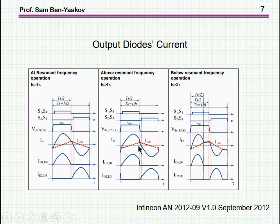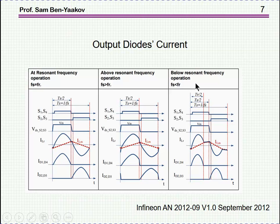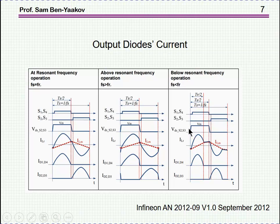There is also a difference between operating above or below resonance in terms of switching behavior. Above resonance, we are going to have zero voltage switching. Below resonance, we are going to have zero current switching — that is, we switch with zero current at the bridge or half bridge. Normally, when using MOSFETs we prefer zero voltage switching, and if using IGBTs we may prefer zero current switching. These are the two operating areas of the LLC converter.